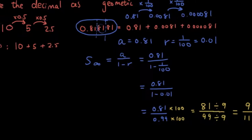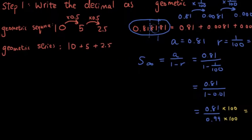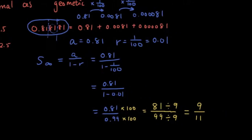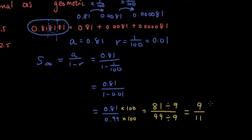That's how you convert a recurring decimal to a fraction by using sum to infinity for a geometric series. Okay, thanks for watching guys. See you next time. Bye.